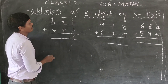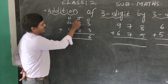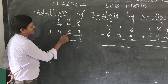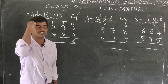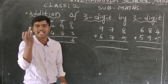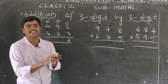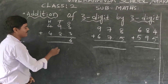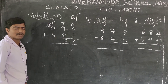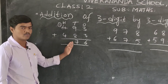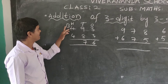Now the tens place. 9+8: keep 9 in mind, count on 8 — 10, 11, 12, 13, 14, 15, 16, 17. The answer is 17. Write 7 here, and carry 1. So 9+8=17, write 7, carry 1.